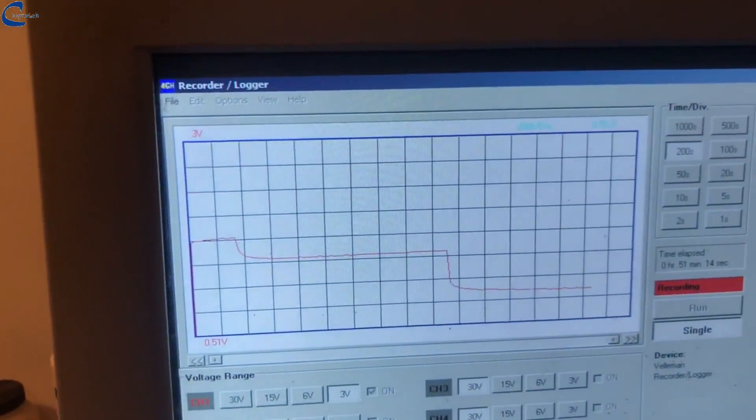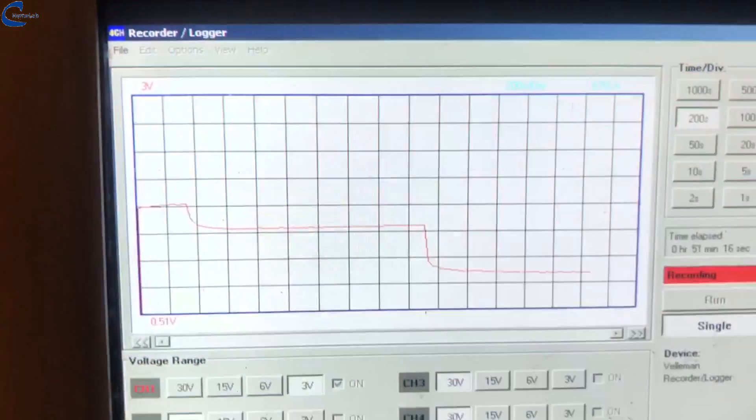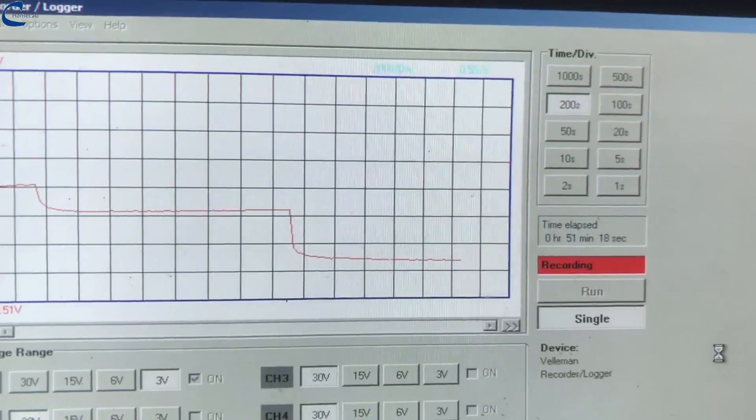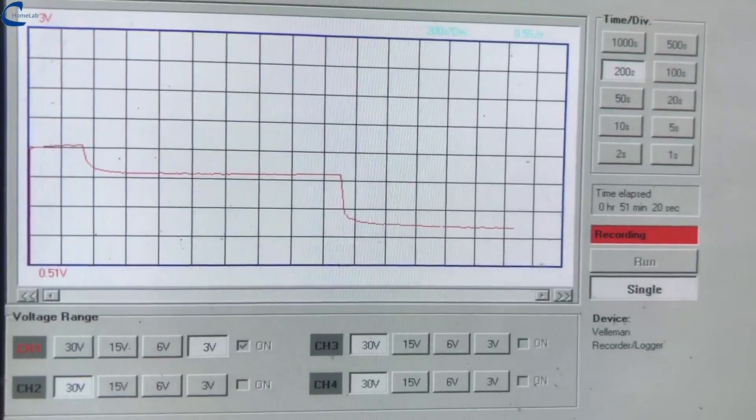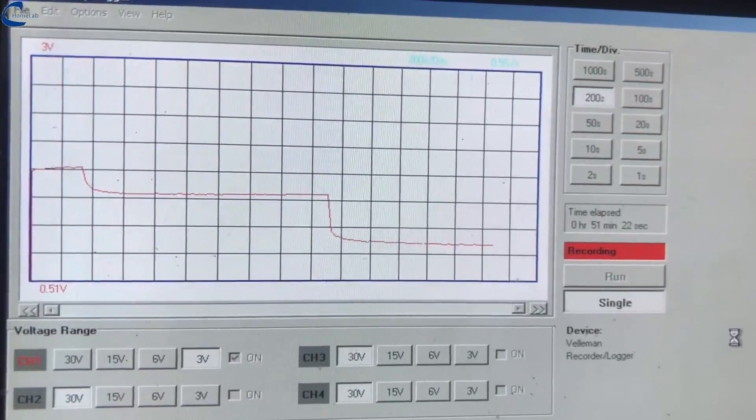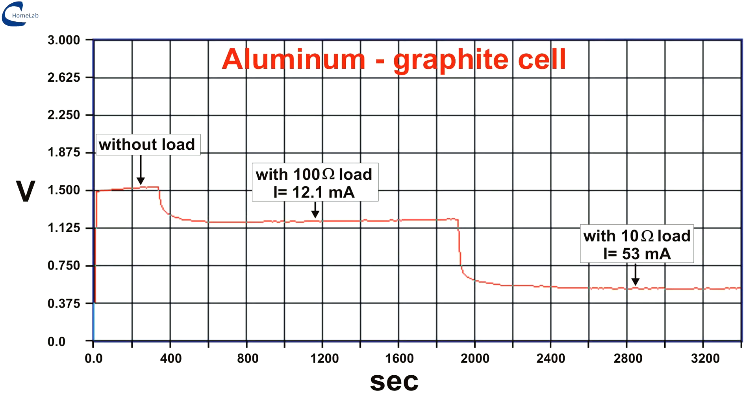On the monitor the progress of the recording. The data logger has been set for a single channel with full scale 3 volts. The duration of the recording is 3400 seconds, or 56 minutes and 40 seconds.